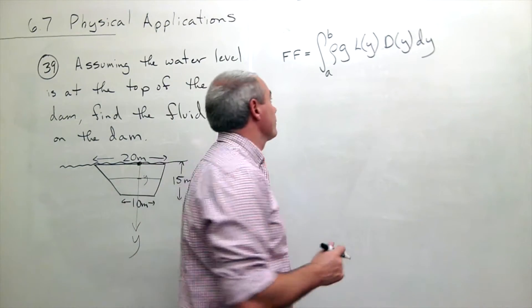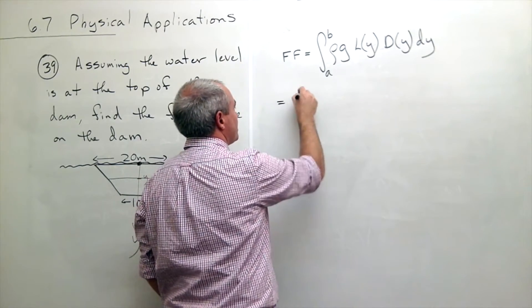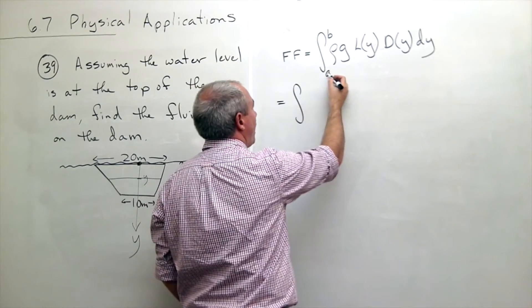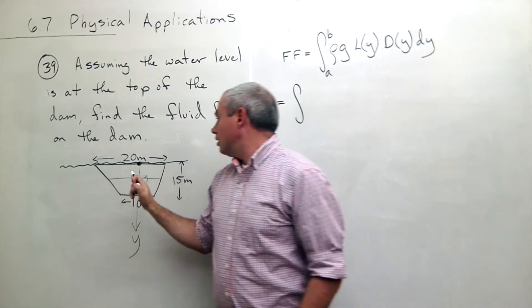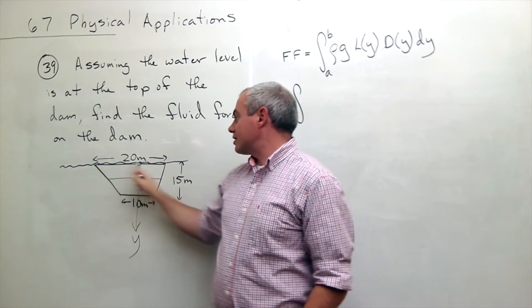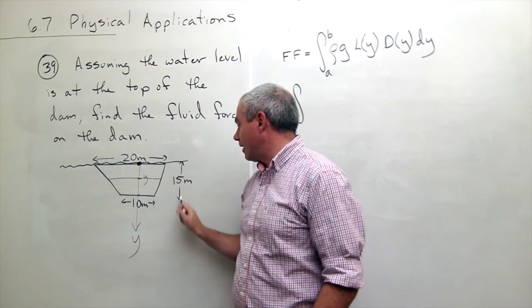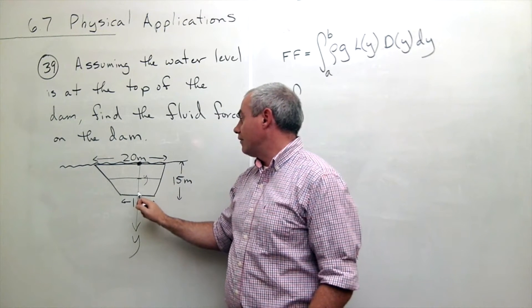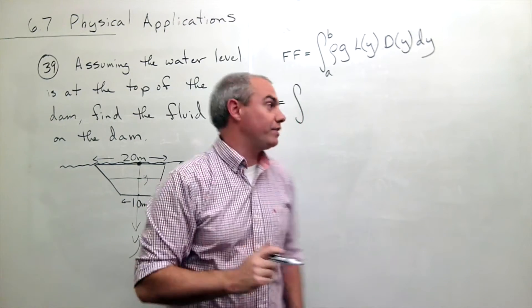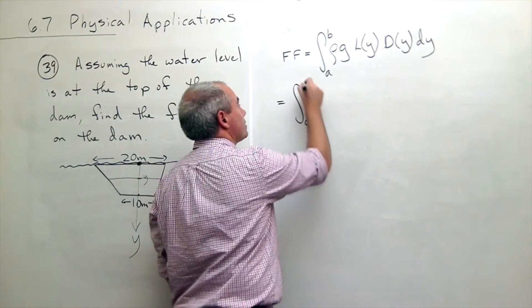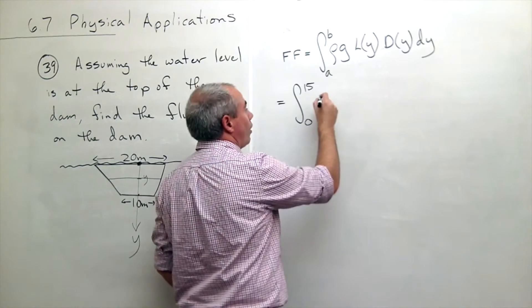So if I want to find the fluid force, I need to integrate from a to b of the weight density times the length across the shape at y times the depth underwater at y dy. This is going to get the job done for me. Now I just have to fill in the pieces. I can start out by saying this is the integral from some y value to some y value.